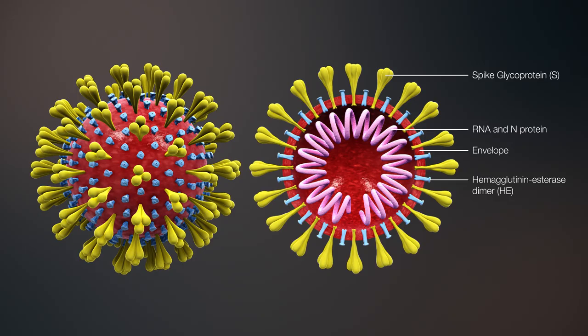The influenza virus particles contain only RNA and are very tiny, about 80 nanometers in diameter. And if we don't really know how they originated on the planet, do we know at least something about how they evolve or change over time? Viruses change by mutations in the RNA which can result during the replication process within the infected cells.